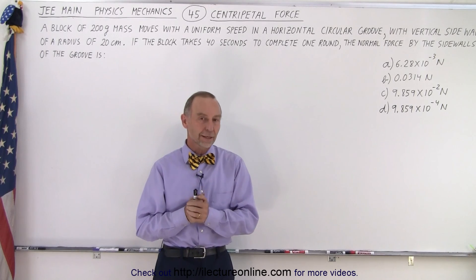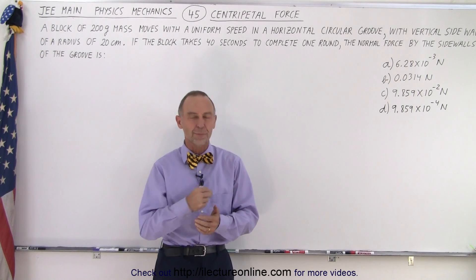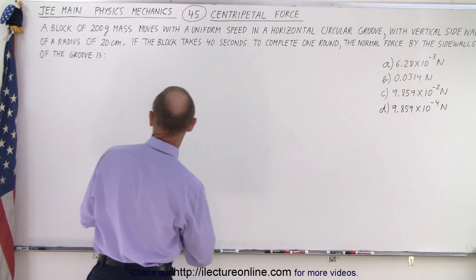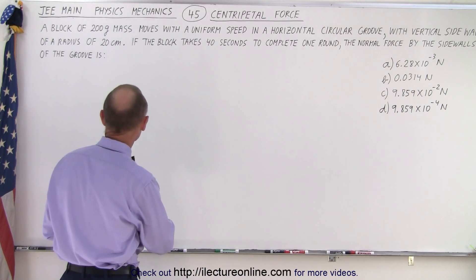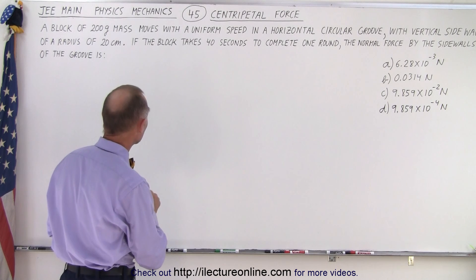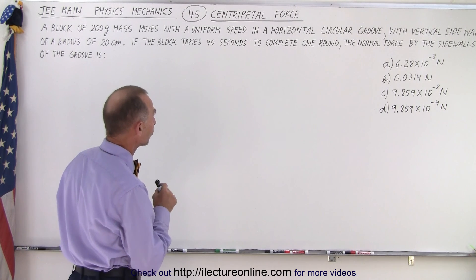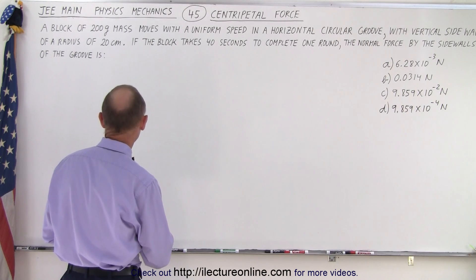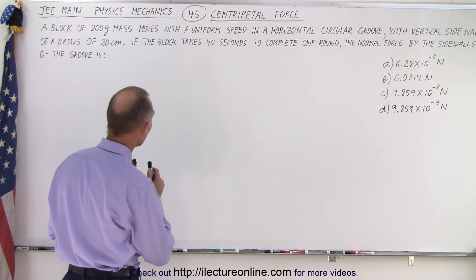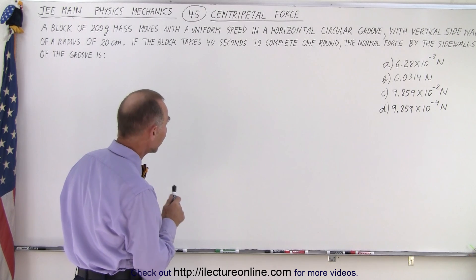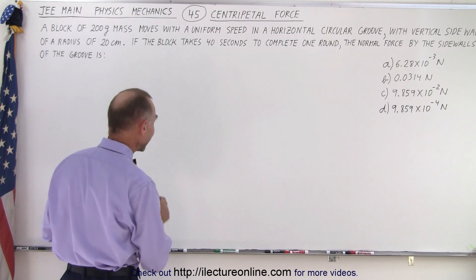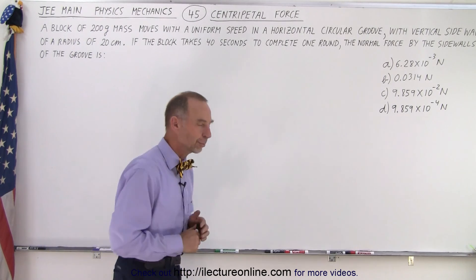Welcome to Electronline. Our next problem deals with centripetal force. Let's read the problem to see what we're dealing with. We have a block of 200 gram mass that moves with a uniform speed in a horizontal circular groove with vertical sidewalls and a radius of 20 centimeters. If the block takes 40 seconds to complete one round, the normal force by the sidewalls of the groove is, and they give us four possible answers.